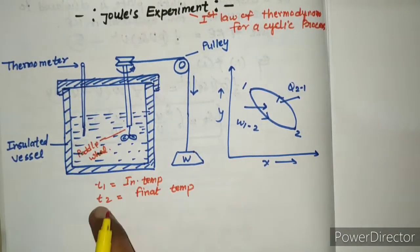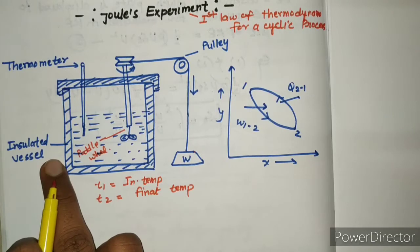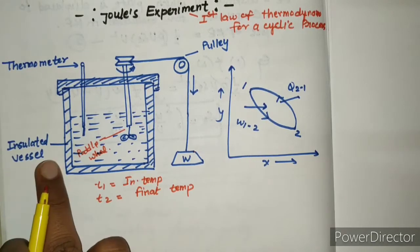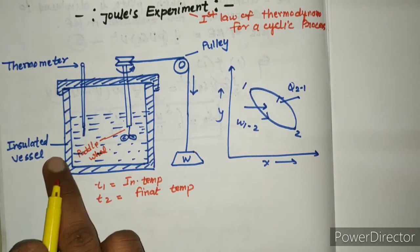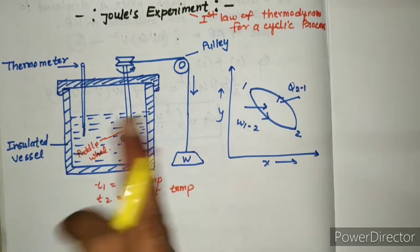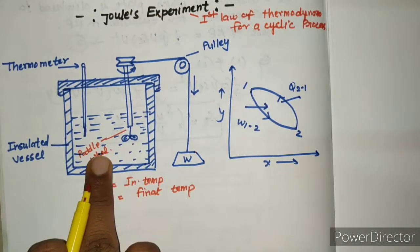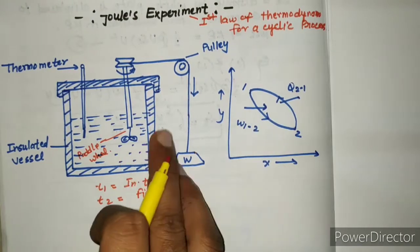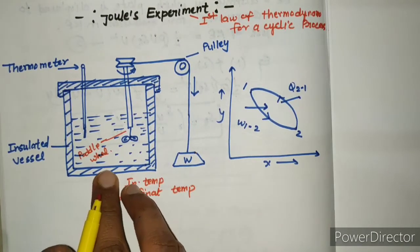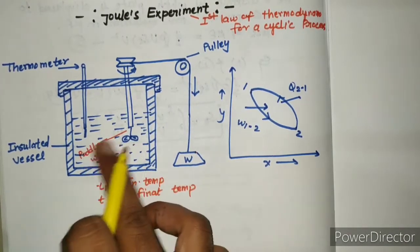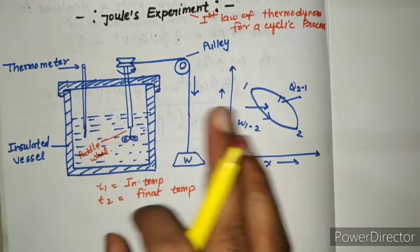This is an insulated vessel. Insulated vessel means heat cannot transfer from system to surrounding or from surrounding to system. That means the heat will be constant, no transfer.